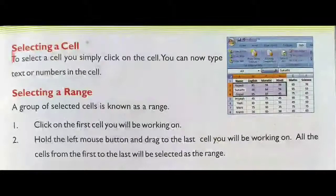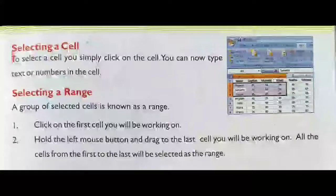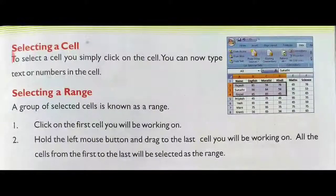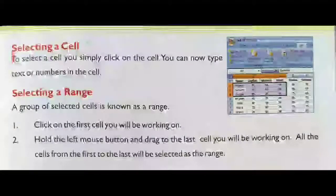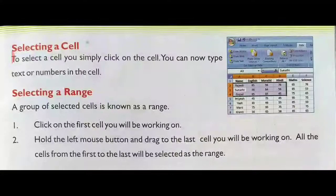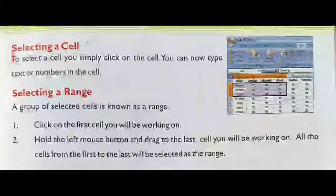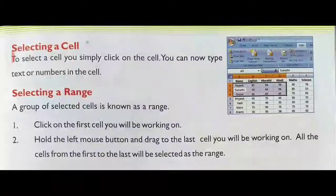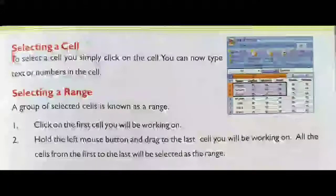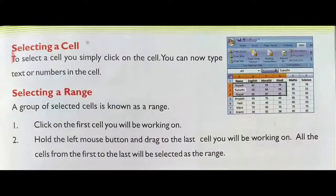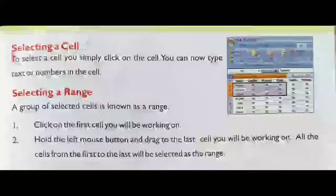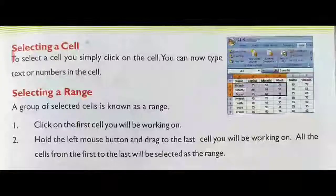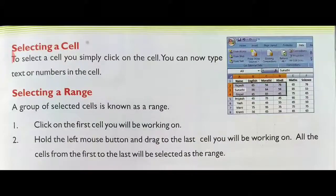First, selecting a cell. To select a cell, you simply click on the cell. You can now type text or numbers in the cell. Whenever you want to select a cell, you have to simply click on it. Once you click on any cell, you are able to type text or numbers.